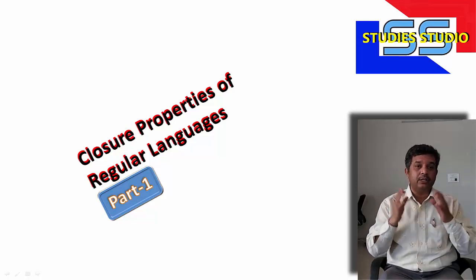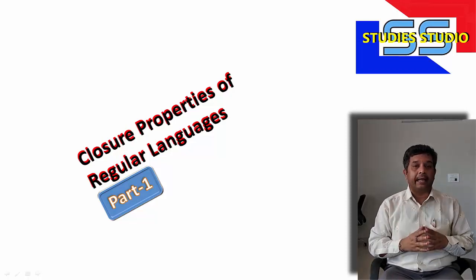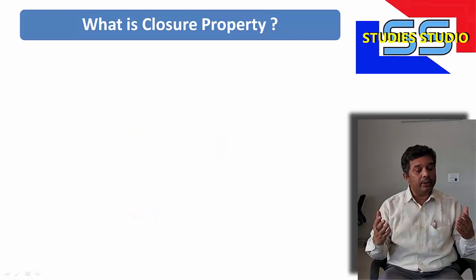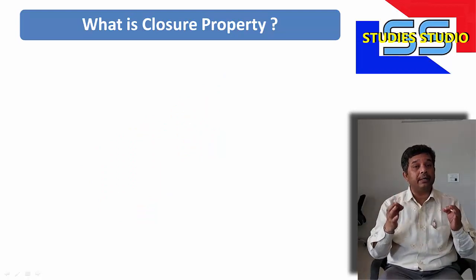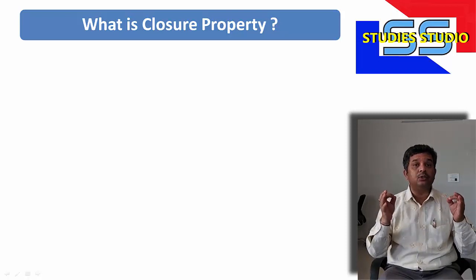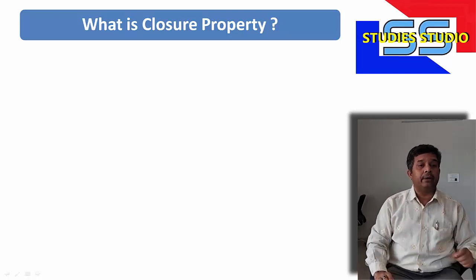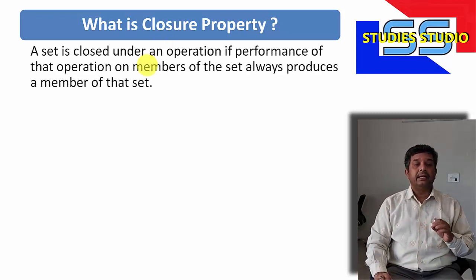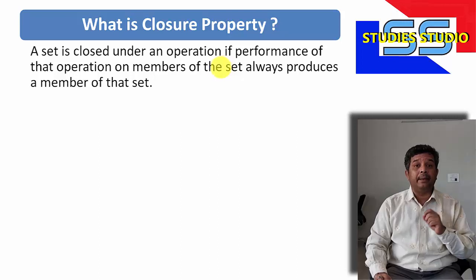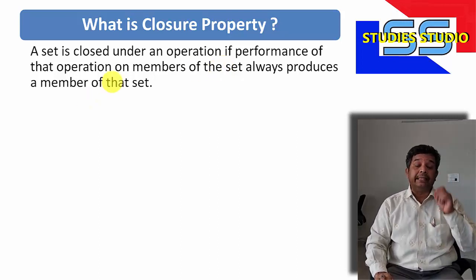Basically, there are eight closure properties of regular languages. In this video, we are going to cover the first four. Before learning about the closure property of regular languages, let us try to understand what closure property actually is. A set is closed under an operation if performance of that operation on the members of the set always produces members of that set.